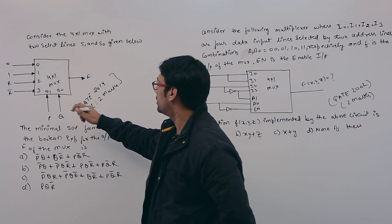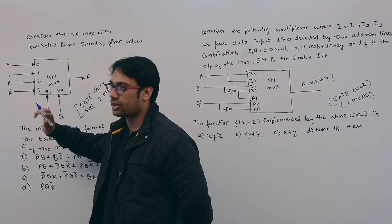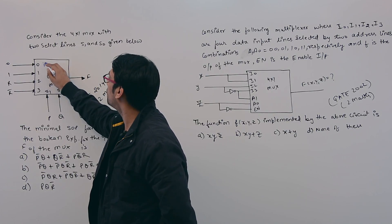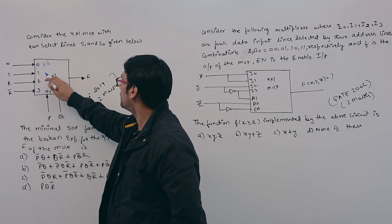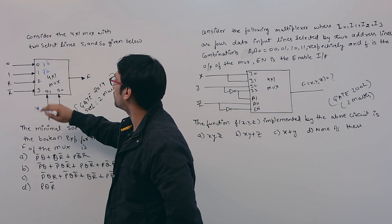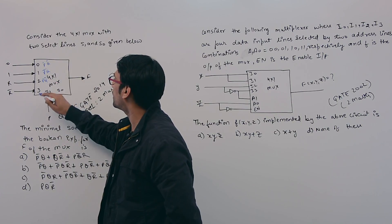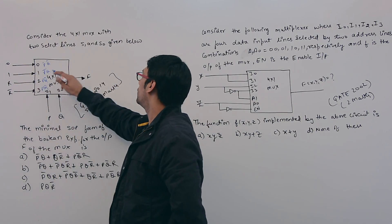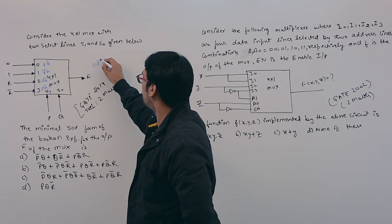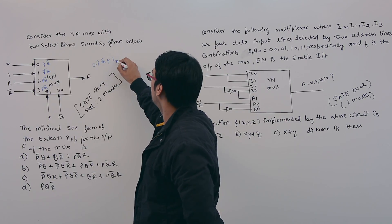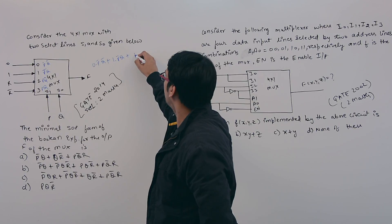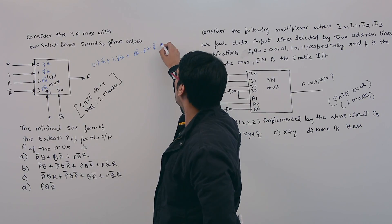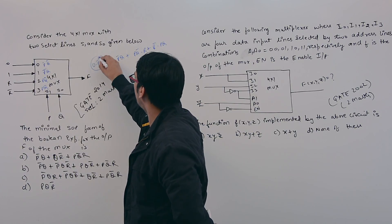Here we are assigning: 0, 1, R, R' to the inputs, with select lines P and Q. This represents P'Q', P'Q, PQ', and PQ respectively. The expression can be written as: 0·P'Q' + 1·P'Q + PQ'·R + R'·PQ. The first term becomes zero, so we simplify from there.